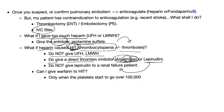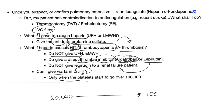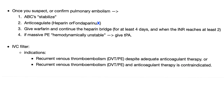Argatroban — it bans thrombin; it's a thrombin inhibitor. Can you give warfarin to a patient with HIT? Yes, but wait until the platelets rise from a dangerously low level to above 100,000. If platelets are only 30,000, give argatroban or lepirudin instead. Summary of PE treatment: once you suspect or confirm PE, treat right away — ABCs, give heparin, give warfarin starting with the heparin bridge for at least four days until INR reaches at least 2. If it's massive PE with hemodynamic instability, give TPA or any fibrinolytic.